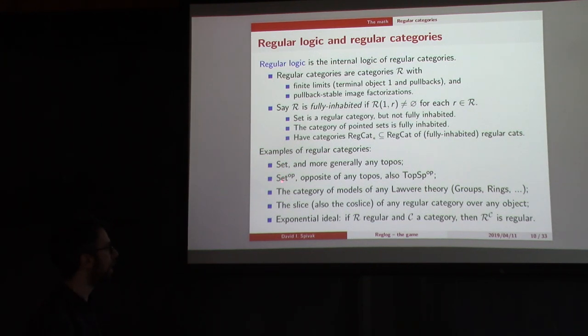As examples of regular, set is a regular category. Any topos is regular. The opposite of any topos is regular. The opposite of the category of topological spaces is regular. The category of models of any linear theory, like the category of groups or rings or modules, is regular. The slice of any regular category over an object is regular, and so is the co-slice. And if R is regular and C is any category, then the category of functors from C to R is regular. They're all over the place, and you can build new ones from old.